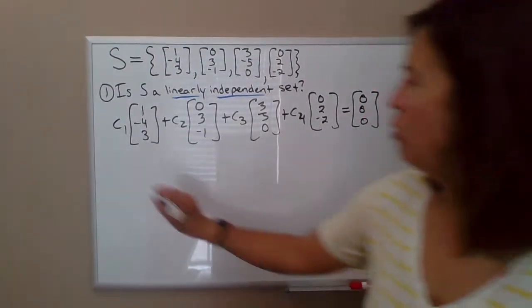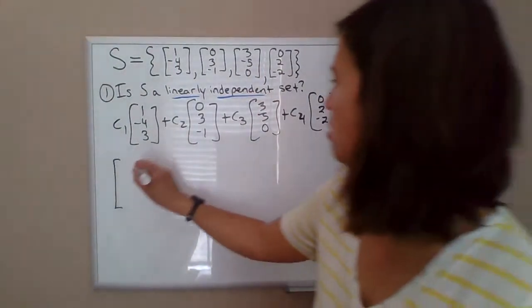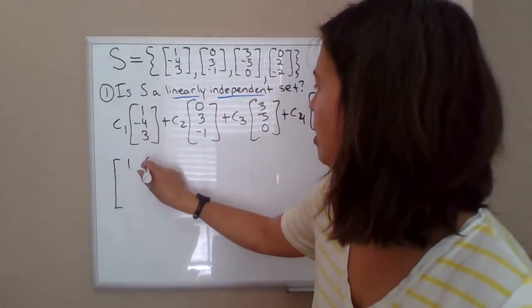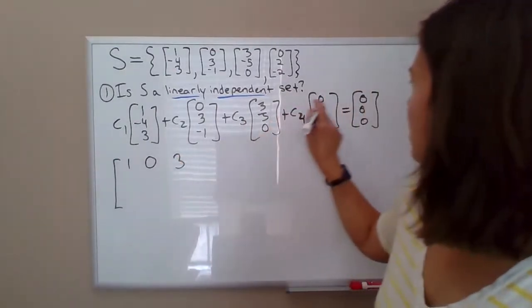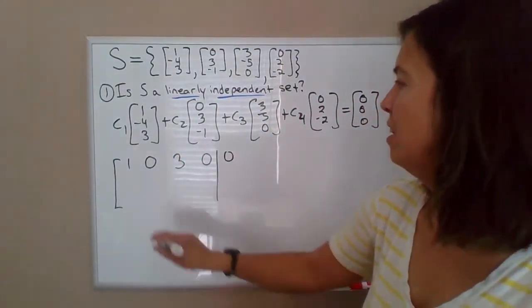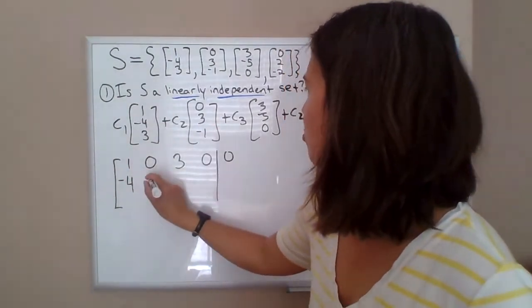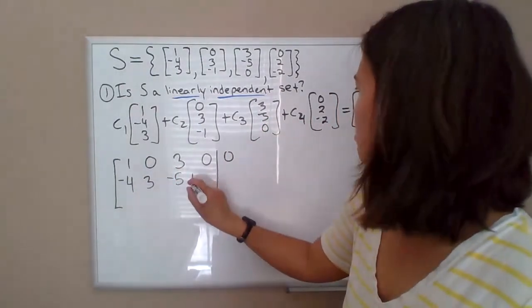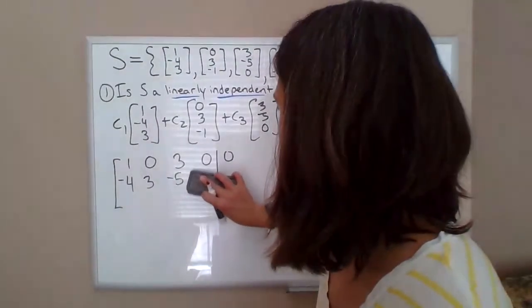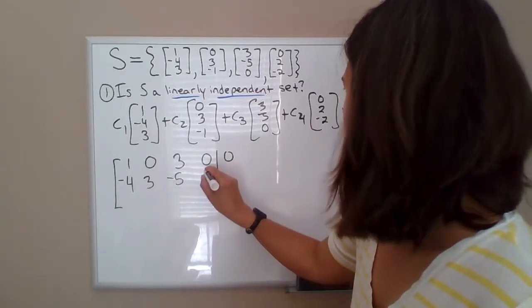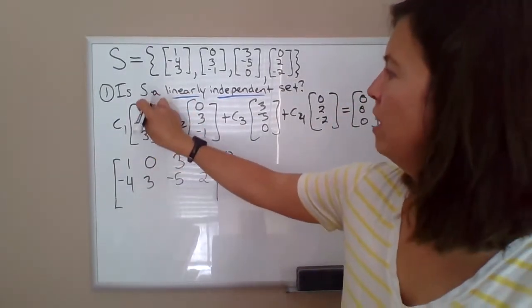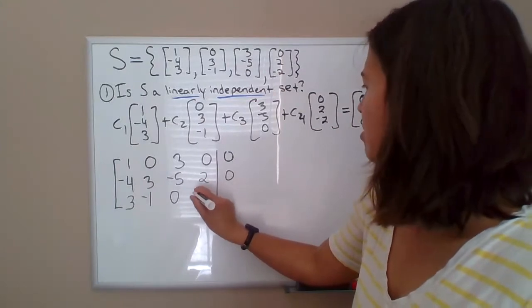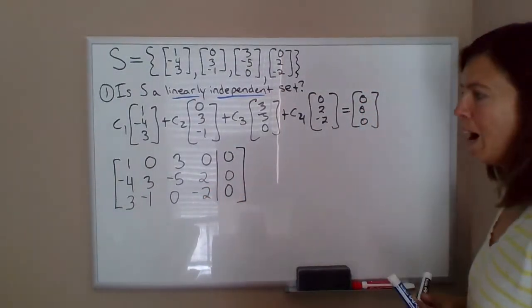So this vector equation would correspond to this augmented matrix where, if you imagine we write out the first equation, it would be one times C1 plus zero times C2 plus three times C3, zero times C4 equals zero. And then same thing with our second row, negative four C1, three C2, negative five C3, plus positive two. So it amounts to just putting these vectors as your columns. And I know you might remember, so you can go straight to this, but I think it's helpful to know why you're doing that.